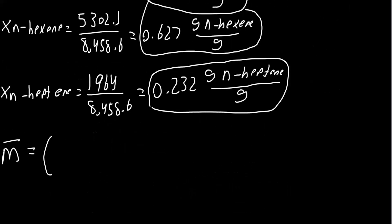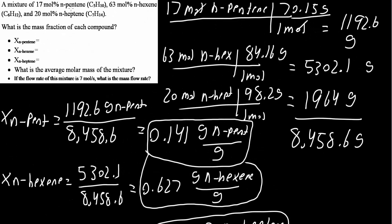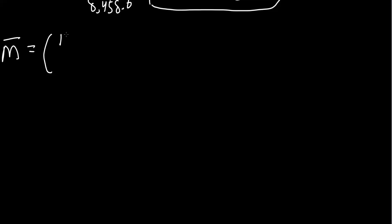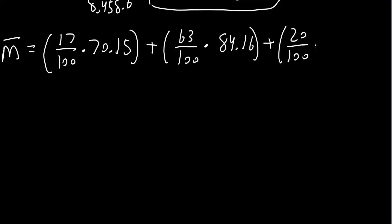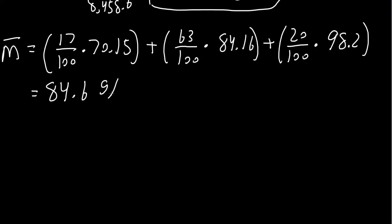To get the average molar mass, we use the mole fractions from the beginning: 17 mole percent of n-pentene, 63 mole percent of n-hexene, and 20 mole percent of n-heptene. So we calculate: (17/100)(70.15) + (63/100)(84.16) + (20/100)(98.2). Multiplying everything out, we get 84.6 grams per mole. This is our average molar mass.